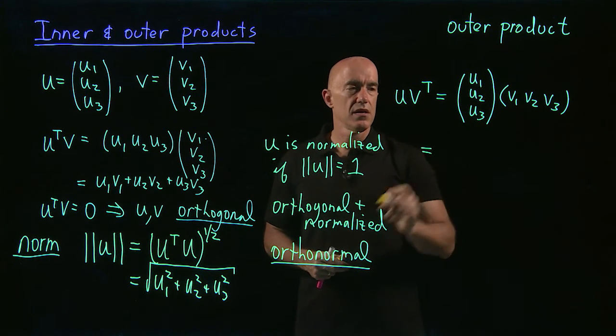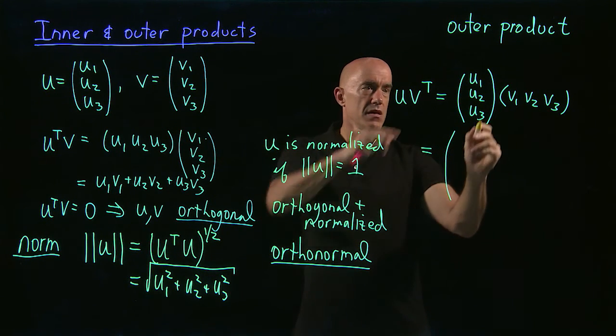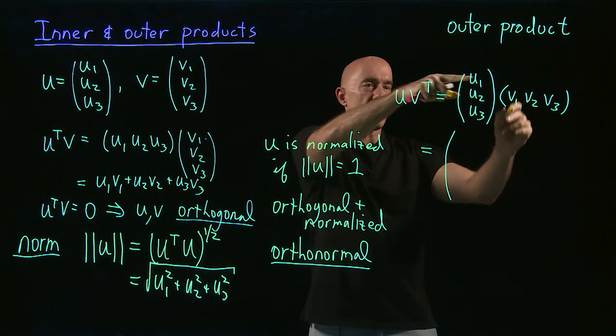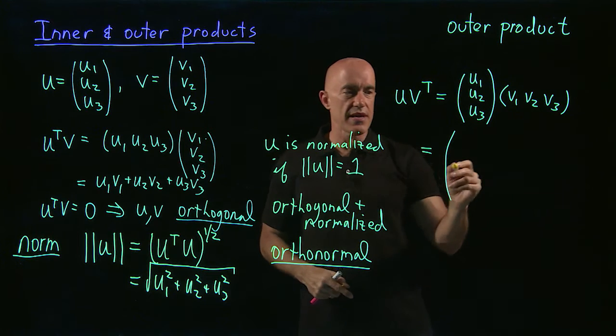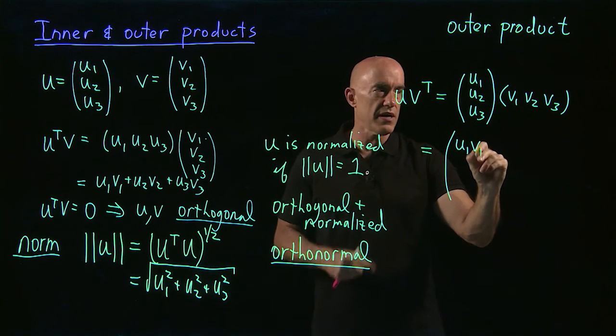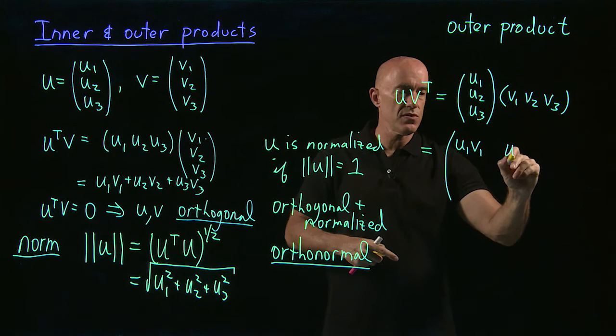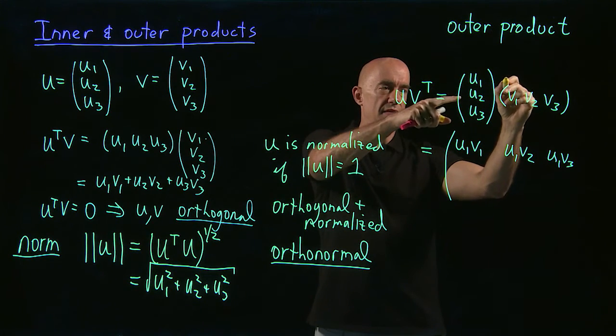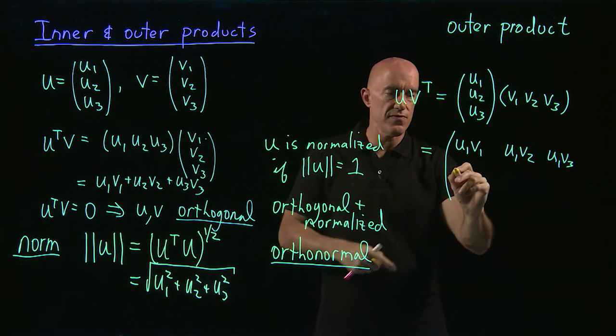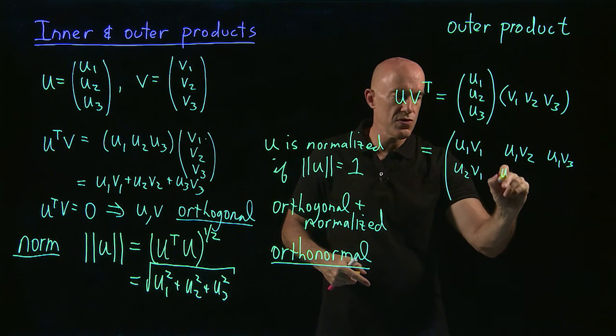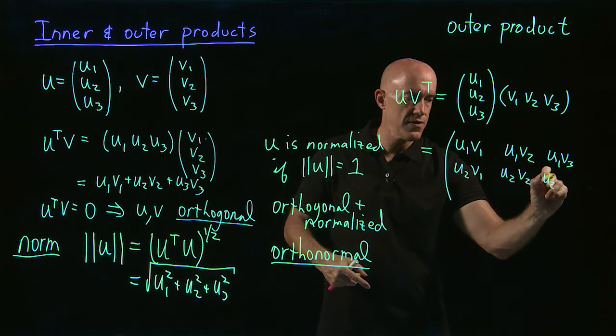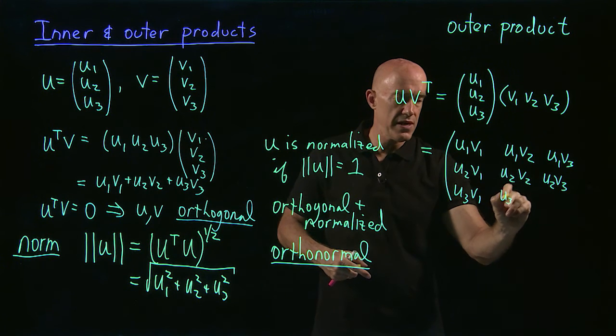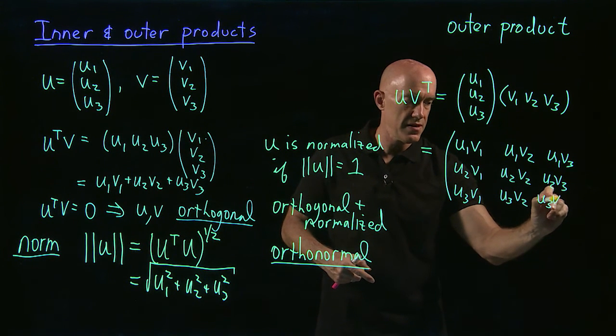Rather odd looking. So we can calculate it. So go across the first row down the first column. Kind of boring, right? There's only one element in the first row and one element in the first column. So that's u1v1, u1v2, u1v3, right? And then the second row, first column, u2v1, u2v2, u2v3. And then finally, u3v1, u3v2, u3v3.